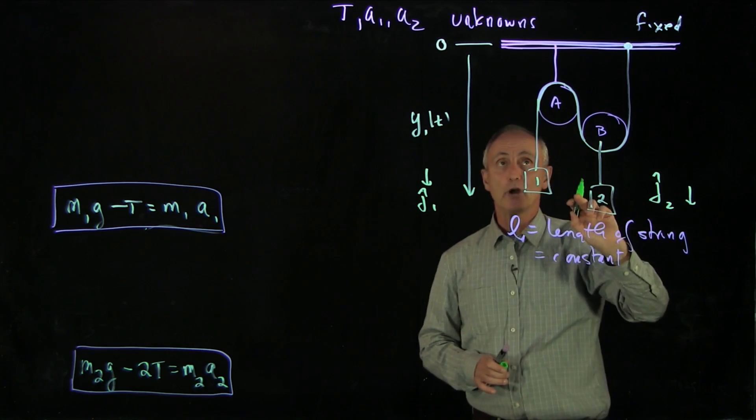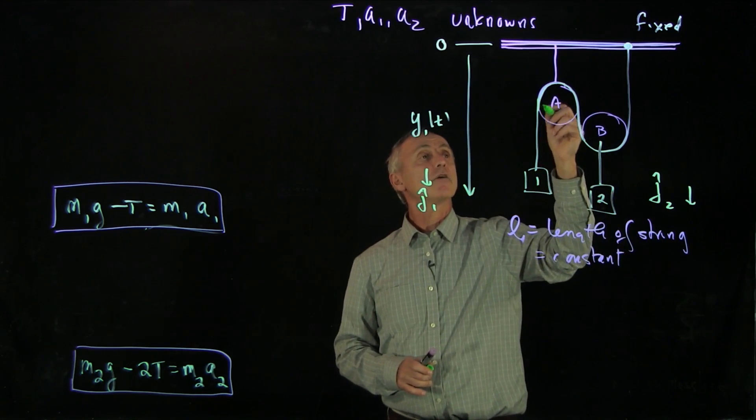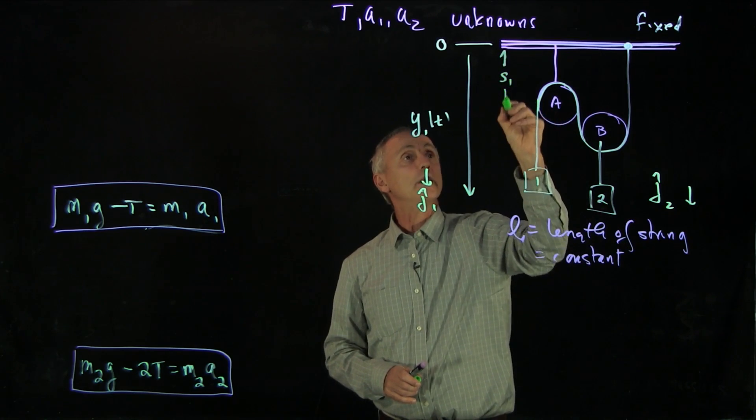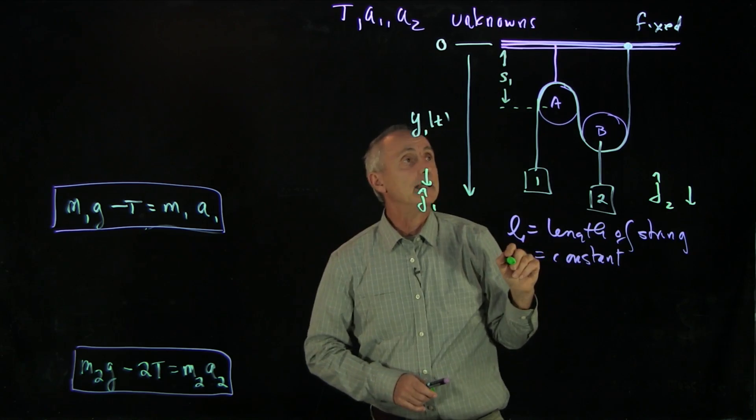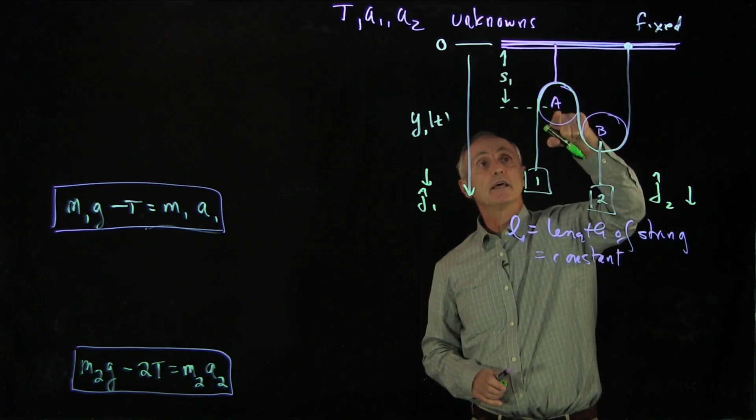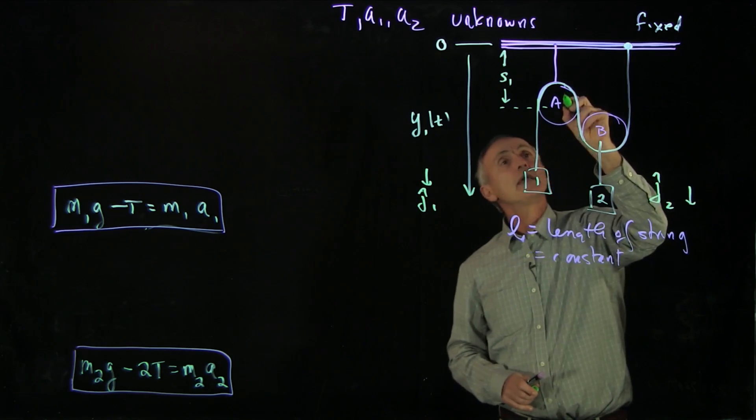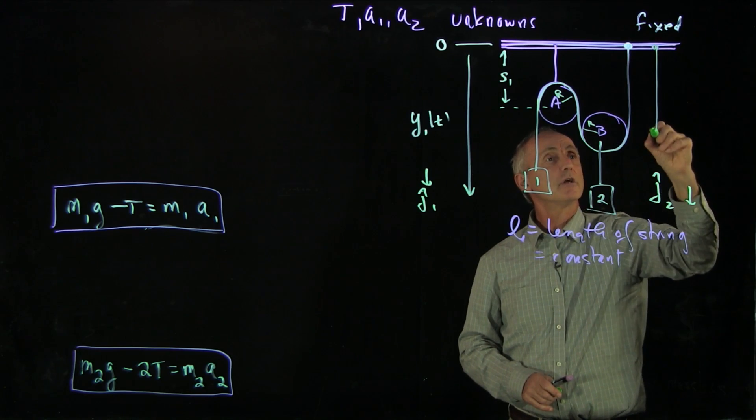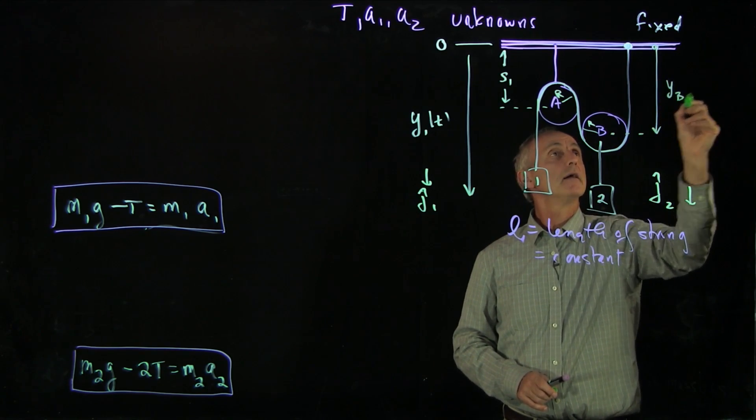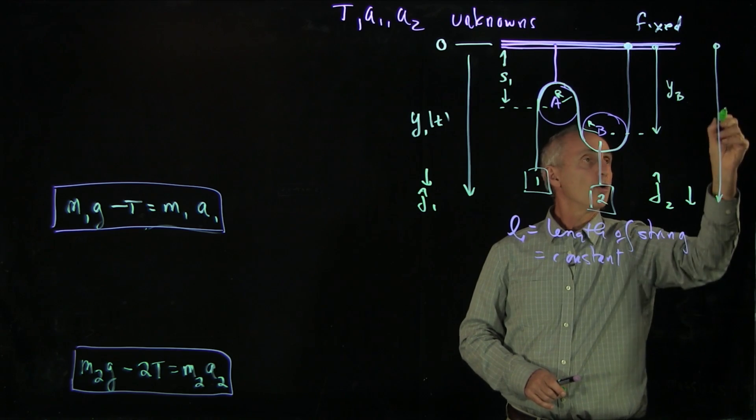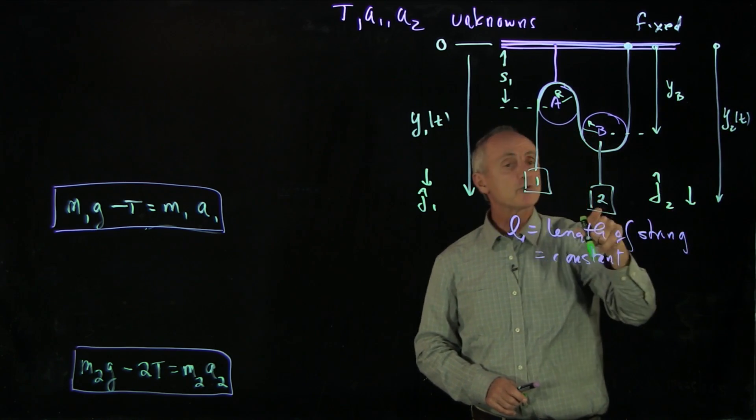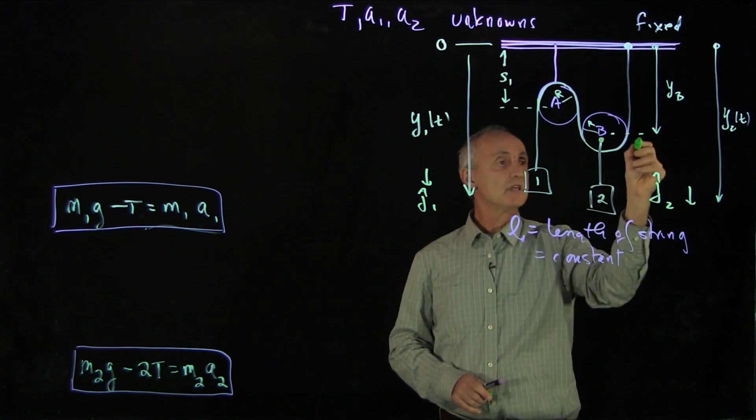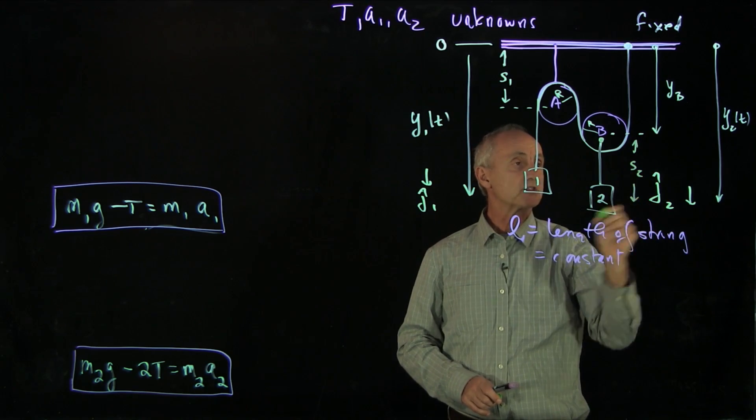What about coordinate functions for the other objects in the system? Well, let's look at a few things first. This is a fixed distance, we'll call it s1, between the ceiling and the center of the pulley. And let's make each of the pulleys a radius r. And let's call this a function yb. And let's make this y2 of t. So now we have coordinate functions for 2 and coordinate functions for 1. And again, recall that this distance here, s2, is a fixed distance.